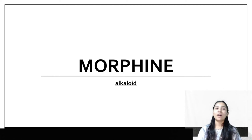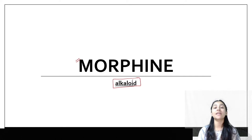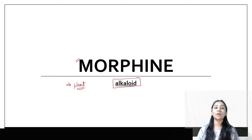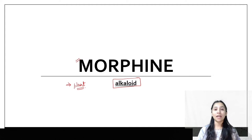Hello everyone, welcome to our YouTube channel. In today's video we are studying morphine. Morphine is an alkaloid. Alkaloids are chemicals derived from plants. The plant source for morphine is the poppy plant, whose scientific name is Papaver somniferum. So this is your plant, and the alkaloid from it is morphine. There are also many other alkaloids in the poppy plant, but in today's lecture we are focusing on morphine.